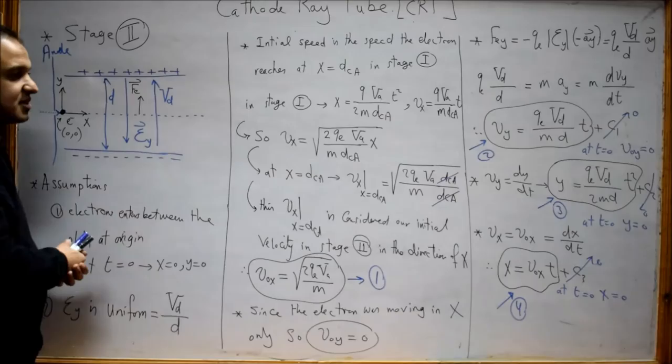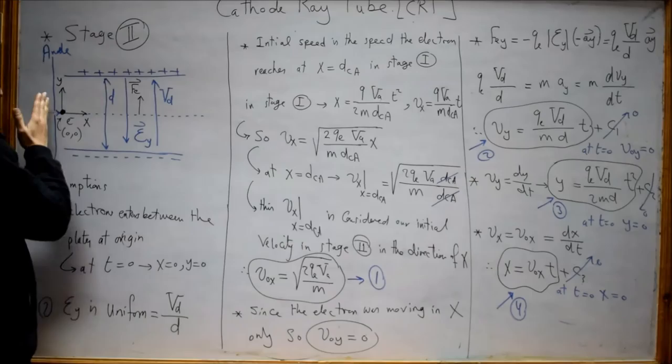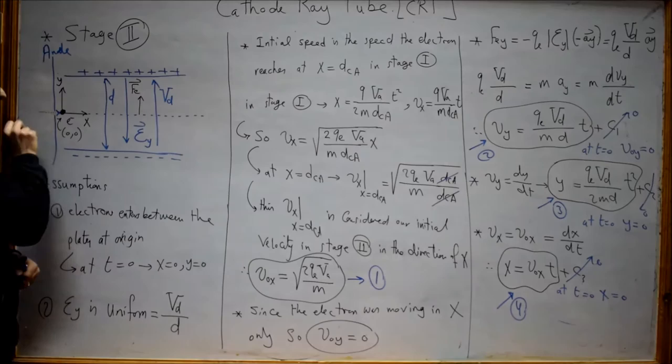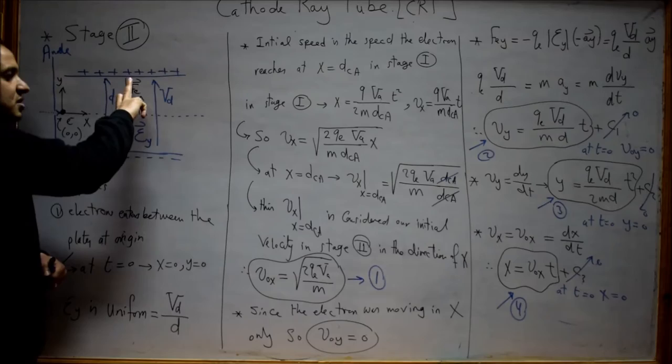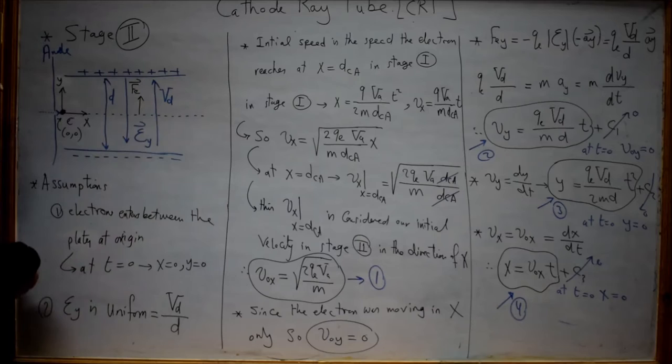A plate that will deflect the electron from its motion in the X direction to the Y direction. In the first stage between the cathode and the anode, the electron was moving in just the X direction. When the electron passes through the little hole in the anode, it will find a region with an electric field — from positive to negative — due to the deflection voltage Vd between these two plates.